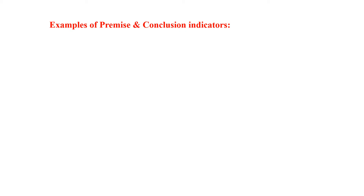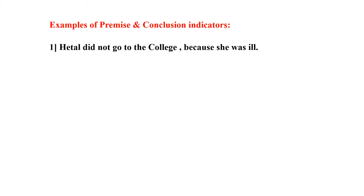Indicators — how will you recognize which is the premise and which is the conclusion in an argument? An argument consists of premises and a conclusion. Let us see how to recognize them. First example: Hethal did not go to college because she was ill. Which is the statement that is proved, and which is given as reason in support of that statement?